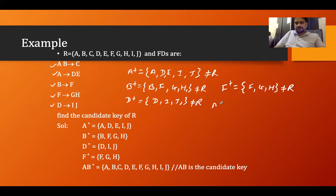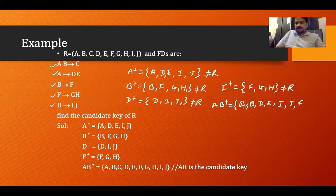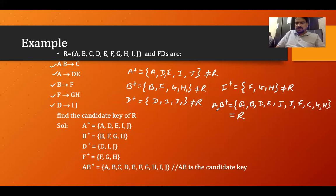Now let's find the closure of AB. A and B come in. A determines D and E; D determines I and J; B determines F; AB together determine C; F determines G and H. So we get {A, B, C, D, E, F, G, H, I, J} — which is completely equal to R. So AB is your candidate key.